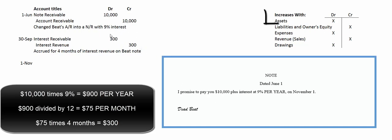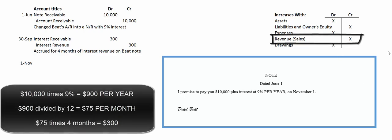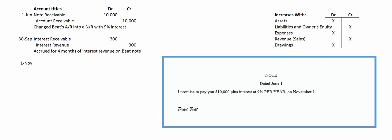Interest receivable is an asset, and assets increase with debits. Revenue increases with credits — we remember that because expenses use debits, and the opposite of expenses is revenue.